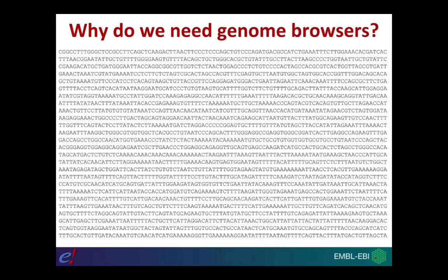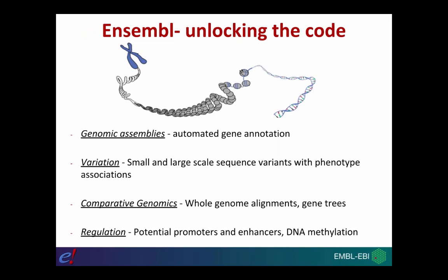So that's what Ensembl tries to do: it takes these genome sequences, annotates them with data and information, and makes it available for scientists to use in their work. Ensembl has four main types of data. Firstly, the genomic assemblies with automated gene annotation. We also have variation data — both small and large scale sequence variants with phenotype associations where available. The third type is comparative genomics, which includes things like whole genome alignments, ortholog predictions, and gene trees.